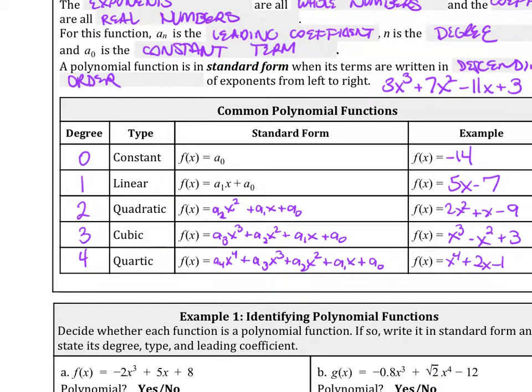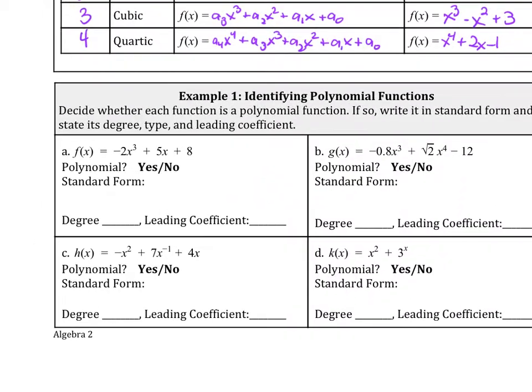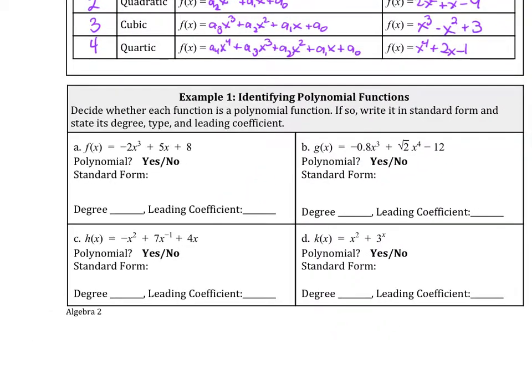So what we're going to do is we're going to identify polynomial functions. We're going to decide whether each function is a polynomial function. If it is, then we're going to write it in standard form if it's not in standard form. And then we're going to state its degree, type, and the leading coefficient.